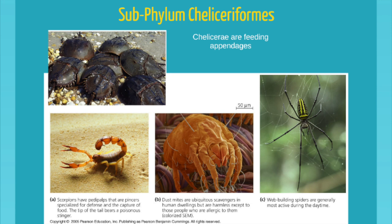The first group we come to are the cheliceraforms. The ancient form is the horseshoe crab. You can also see the scorpion, dust mites, ticks, fleas, and of course spiders. Spiders are pretty popular right now thanks to Tom Holland and the Avengers. You will actually do a lab on spiderweb building, and one of the things I'll want you to focus on is spider anatomy.